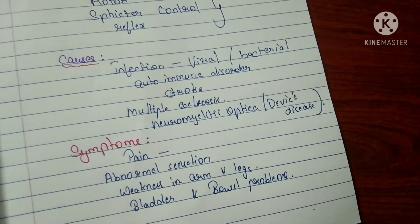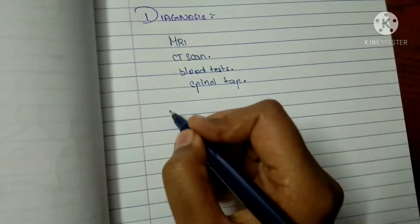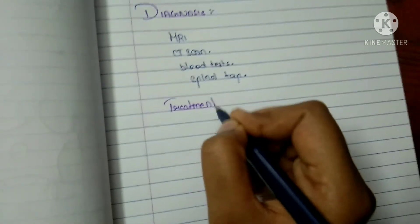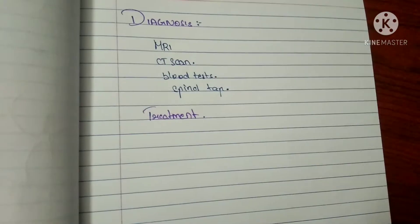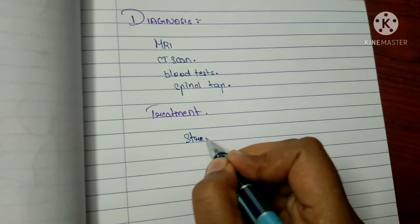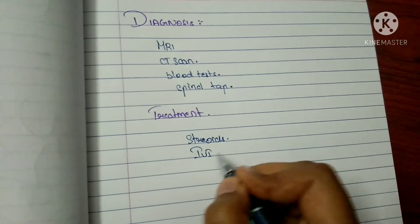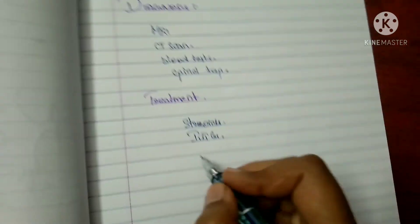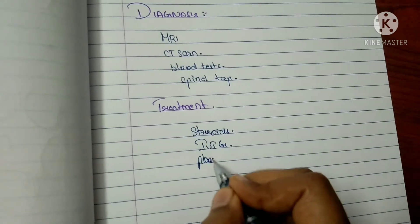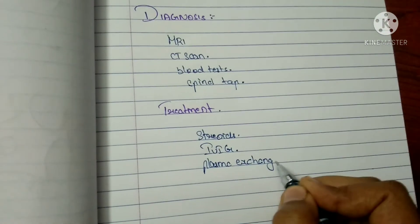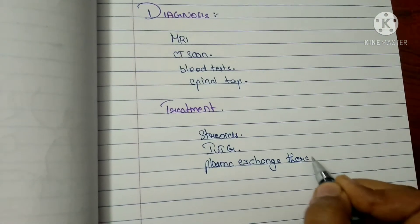Treatment of transverse myelitis includes the following medications: steroids, which will reduce the inflammation in the spine, then intravenous immunoglobulin, and plasma exchange therapy, also called plasmapheresis.